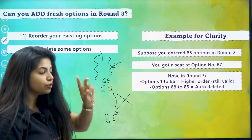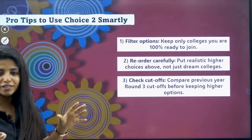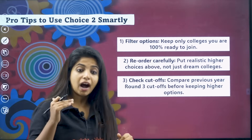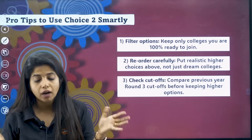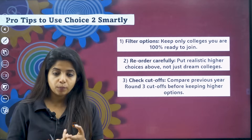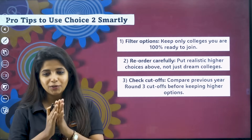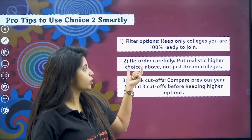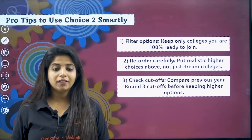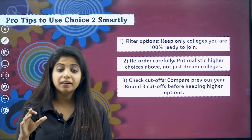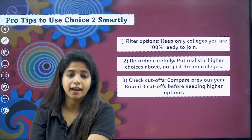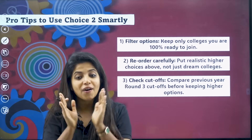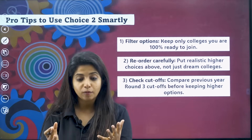Pro tips to use choice two smartly: First, filter your options — keep only colleges you are 100% ready to join. If in the next round you get an upgraded college but do not want to join, your course fee will be gone and you would also have to pay a penalty of five times the fee. So keep only colleges you are likely to join and please reorder carefully. Put realistic higher choices above, not just dream colleges that do not match your rank at all.